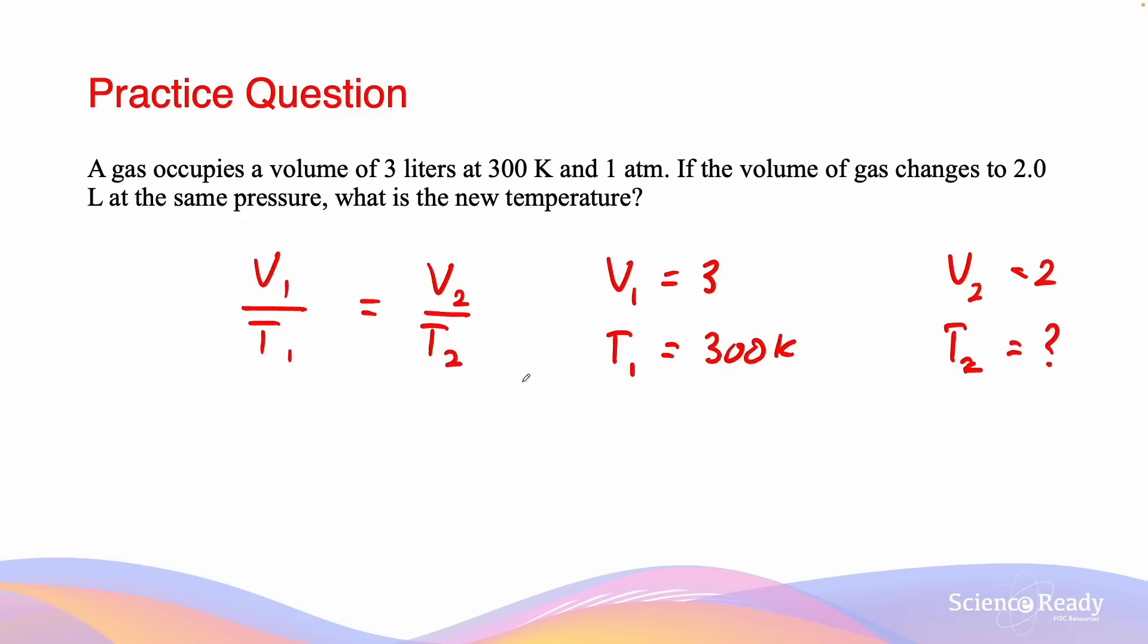So we can rearrange, again, our equation to work out what T2 is. By inverting both the left and the right-hand side of the equation, T1 over V1 equals T2 over V2. And then by multiplying both the left and the right-hand sides by V2, we can get the inequality T2 equals T1 times V2 divided by V1. If we substitute these values, 300 multiplied by 2 divided by 3 is equal to 200 Kelvin. And so the new temperature is 200 Kelvin.